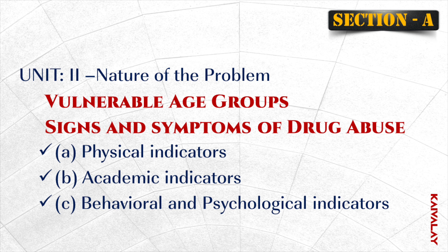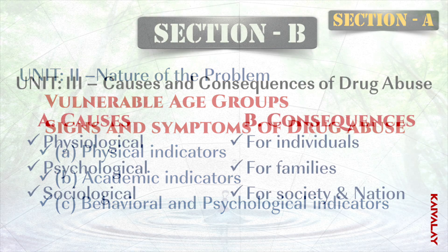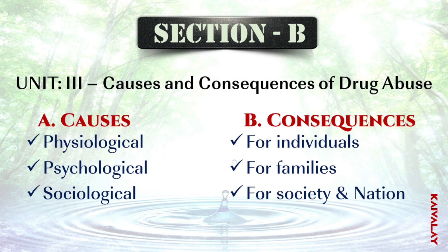Unit 2: Nature of the Problem — Vulnerable Age Groups, Signs and Symptoms of Drug Abuse. This includes Physical Indicators, Academic Indicators, and Behavioral and Psychological Indicators.